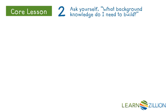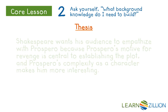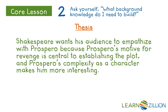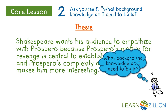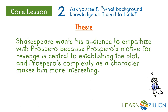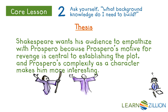Now that we've established what text and author we'll be discussing and set the reader up with a short summary, we'll want to make sure we're providing any further context and background knowledge they'll need to understand our argument. We stated that Shakespeare wants his audience to empathize with Prospero because Prospero's motive for revenge is central to establishing the plot and Prospero's complexity as a character makes him more interesting. I'll ask myself: what background knowledge do I need to build to set the stage for this thesis? I'll want to build my audience's knowledge of how Shakespeare uses Prospero's retelling of past events to establish the plot, and also establish how Prospero is developed as a complex character — characterized both positively and negatively.